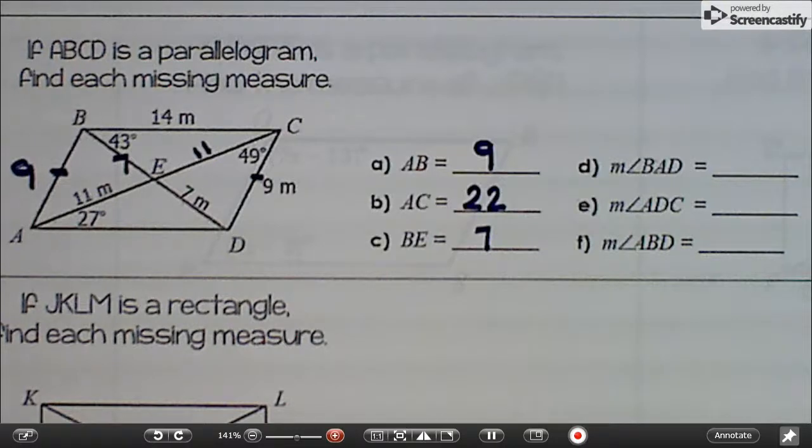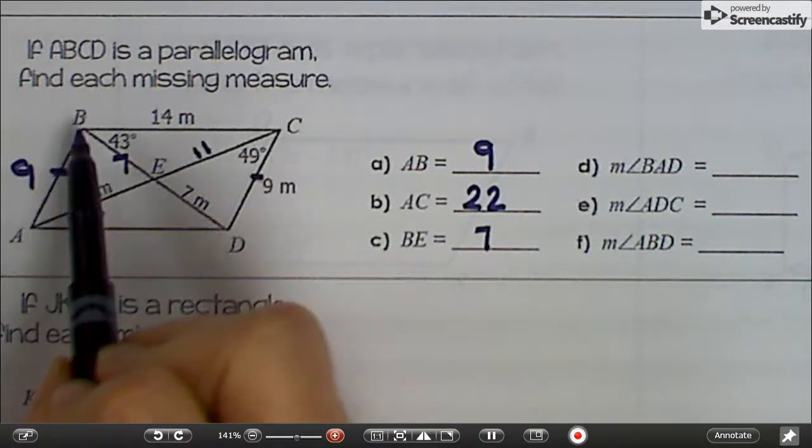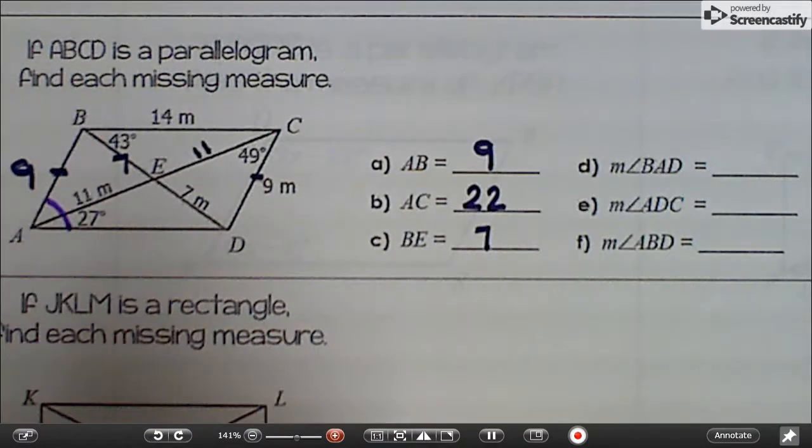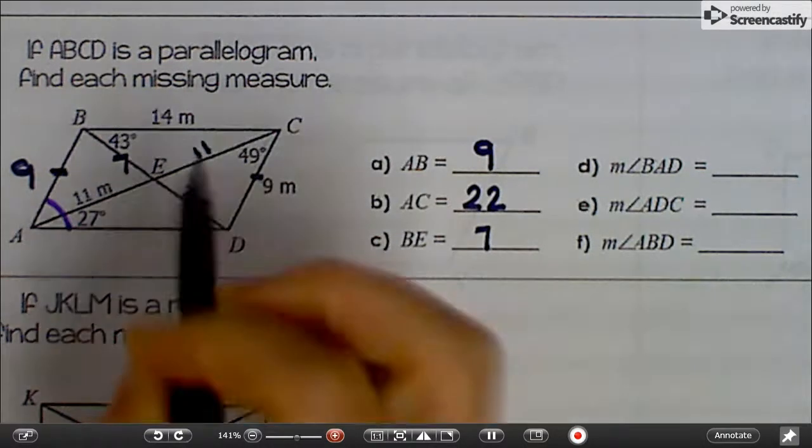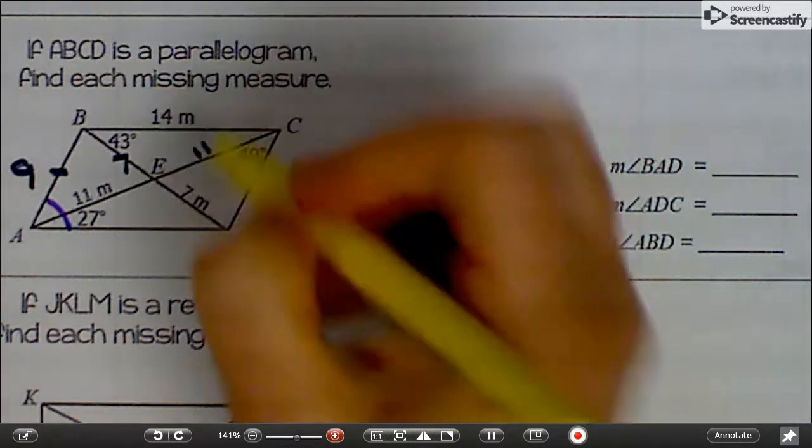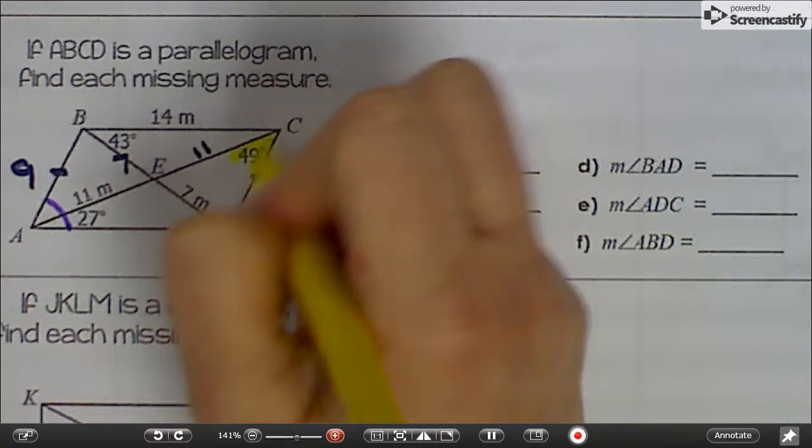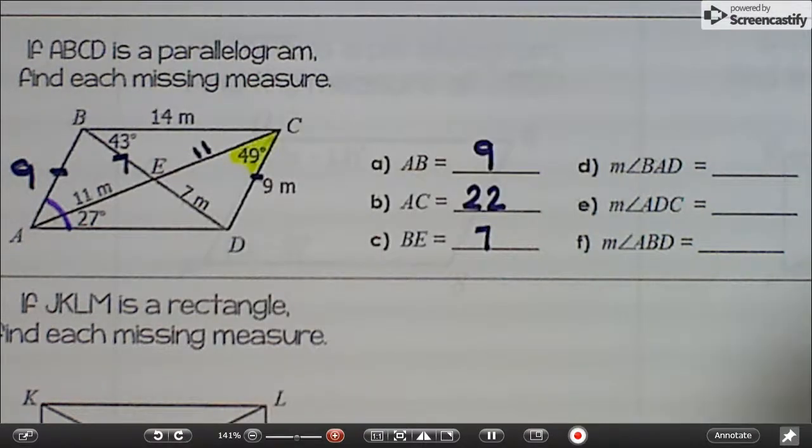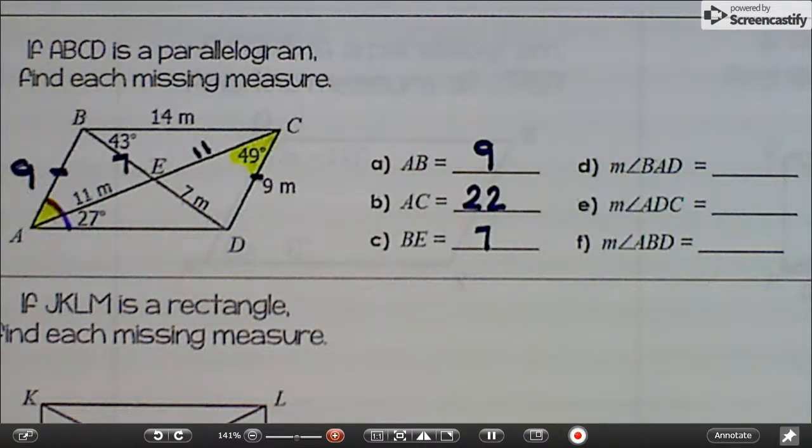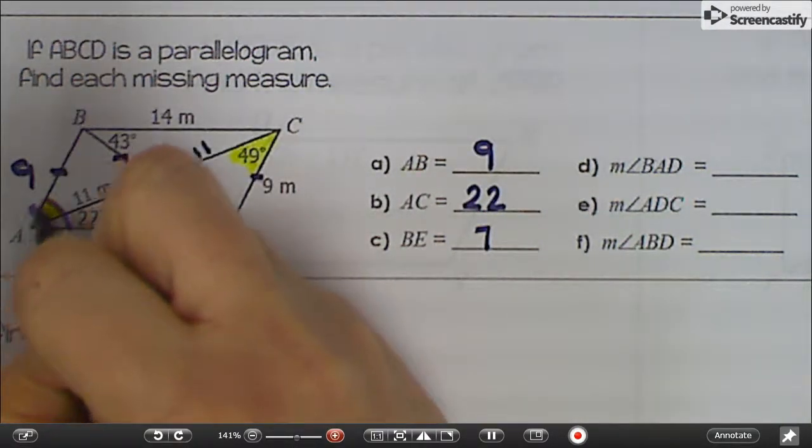All right, so if we're looking at angles, angle BAD is this whole thing here. All right, but we only have a piece of it right there. So you need to look around the shape and see if there's anything else you can find. Over here we have 49. And if you look at this, wouldn't those be alternate interior angles? So that's also 49.